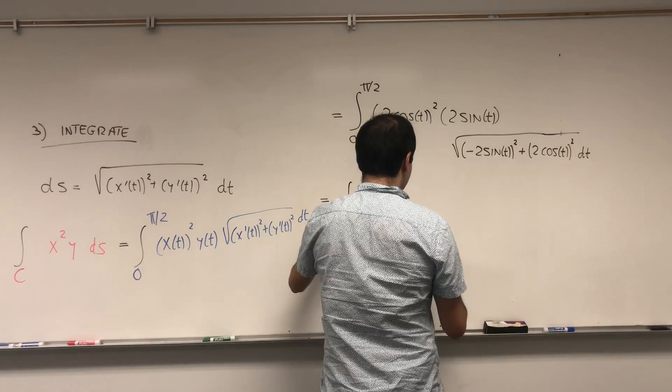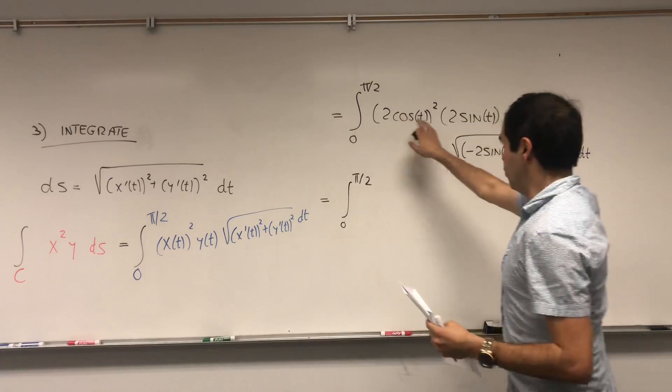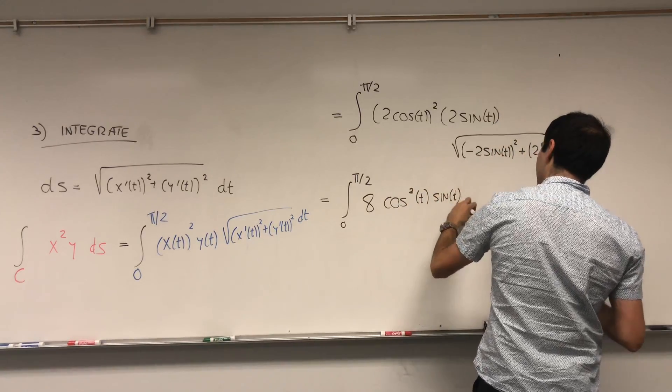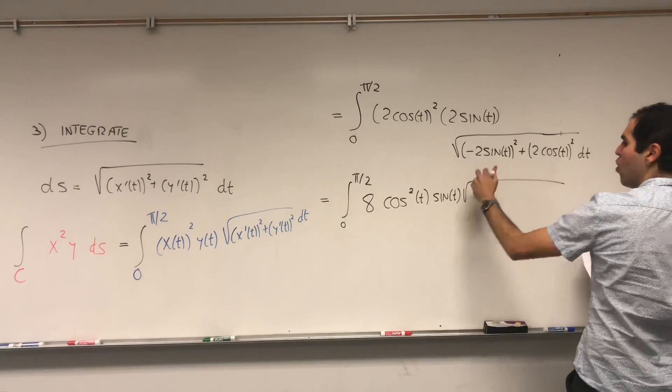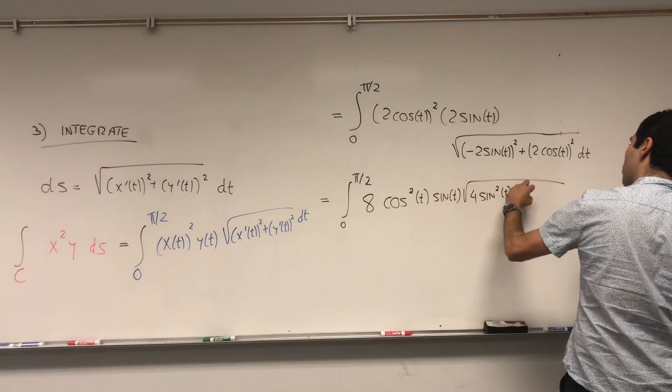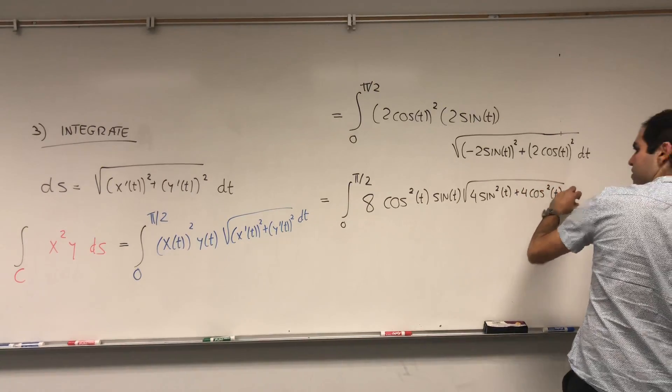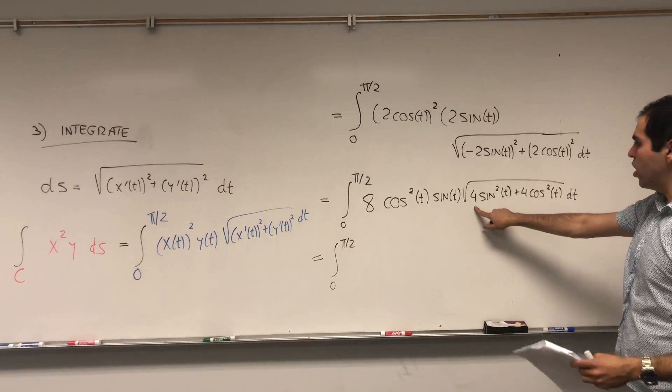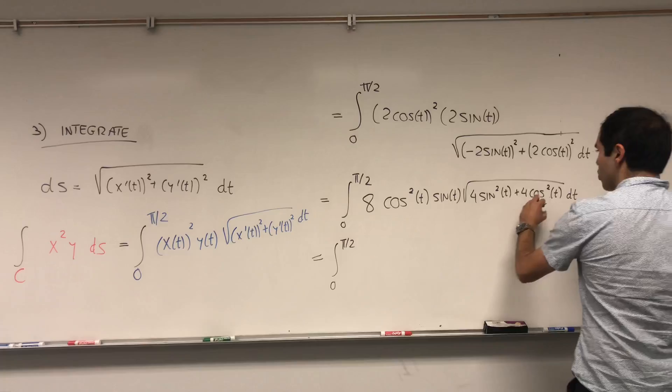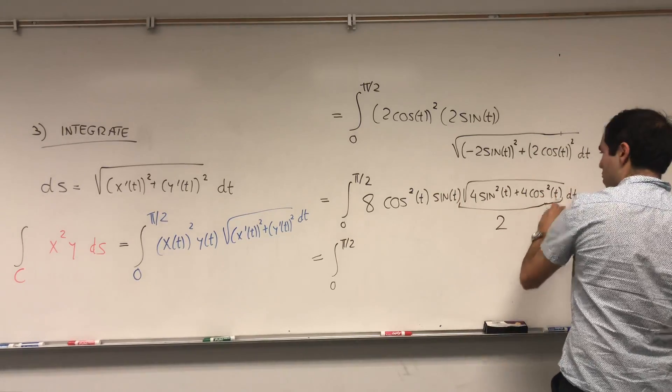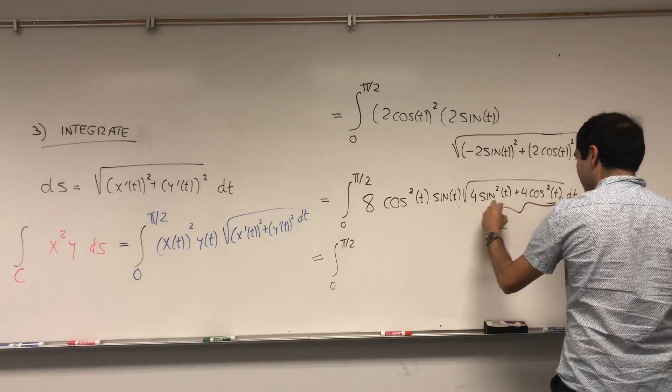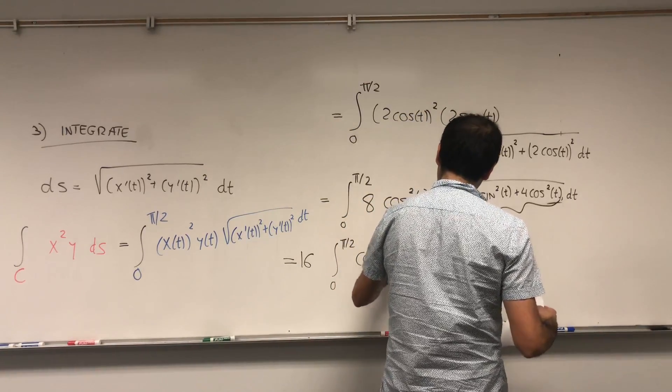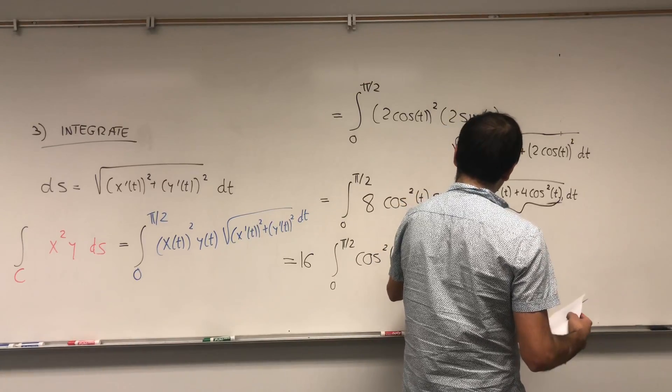And, just erase this, but x was two cosine of t squared. Y was two sine of t. And, then, times square root of what? Well, the derivative of x, which is minus two sine of t squared. Plus, the derivative of y squared. So, two cosine of t squared. And, then, dt. And, then, it just simplifies. So, it becomes integral from zero to pi over two. So, two squared times two, which is eight. Cosine squared of t, sine of t. And, what this becomes, it becomes four sine squared of t. Plus, four cosine squared of t. dt. And, then, that becomes integral from zero to pi over two. So, notice what this becomes. It's just square root of four, which becomes two. So, this is just two. So, times eight. So, it's sixteen. Cosine squared of t. Sine of t, dt.